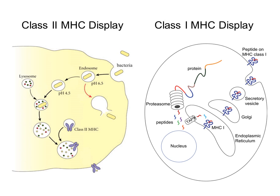Class 1 MHC display involves cytoplasmic proteins. Typically, a virus infects the cell resulting in cytoplasmic production of viral proteins. The proteasome generates peptide fragments out of the viral proteins. These peptides are sampled by TAP and loaded into class 1 MHC complexes. These elicit binding to a different population of T cells — the cytotoxic T cells — which will kill these cells.